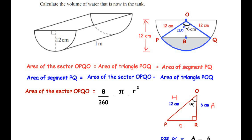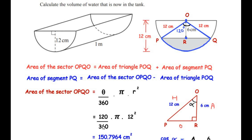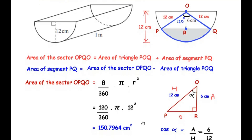With θ = 120° and radius R = 12cm, we substitute into the sector area formula: (120 / 360) × π × 12² = 150.7964 cm². Since this is an intermediate step, we keep at least 4 decimal places to ensure an accurate final answer.